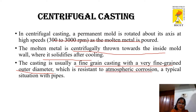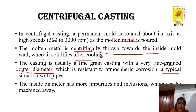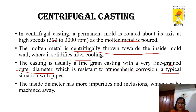The material used for this casting process — both inner and outer diameter — should have properties of corrosion resistance, typical for pipe applications. The inside diameter has more impurities and inclusions which can be machined away. The process is independent of both gravity and pressure since it creates its own force — the centrifugal force.